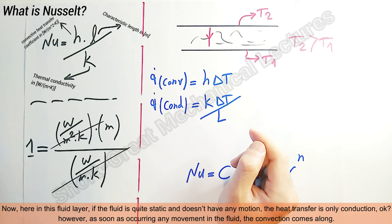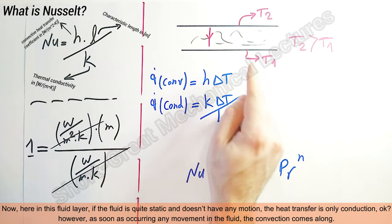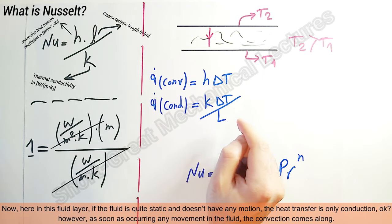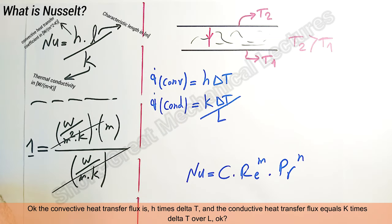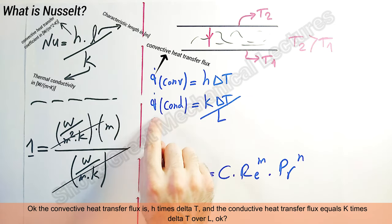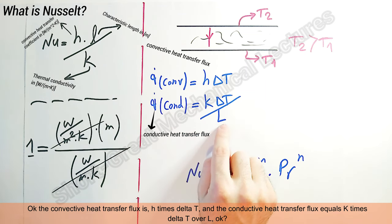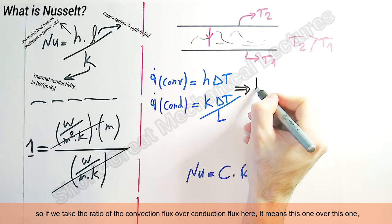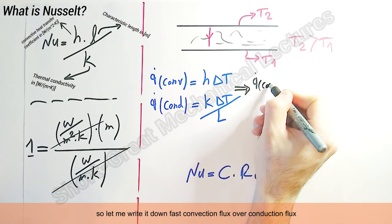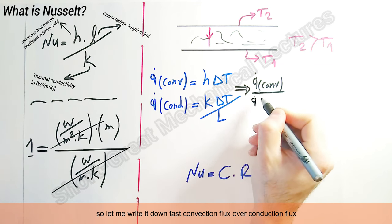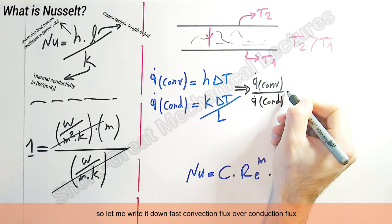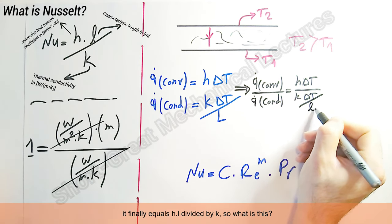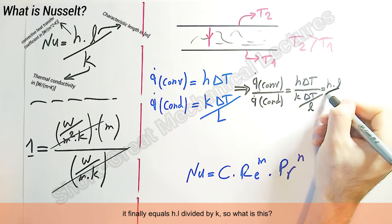Now, in this fluid layer, if the flow is quite static and has no motion, the heat transfer is only conduction. However, as soon as any movement occurs in the fluid, convection comes along. The convective heat transfer flux is h times delta T, and the conductive heat transfer flux equals k times delta T over L. If we take the ratio of convection flux over conduction flux, it finally equals h times L divided by k.